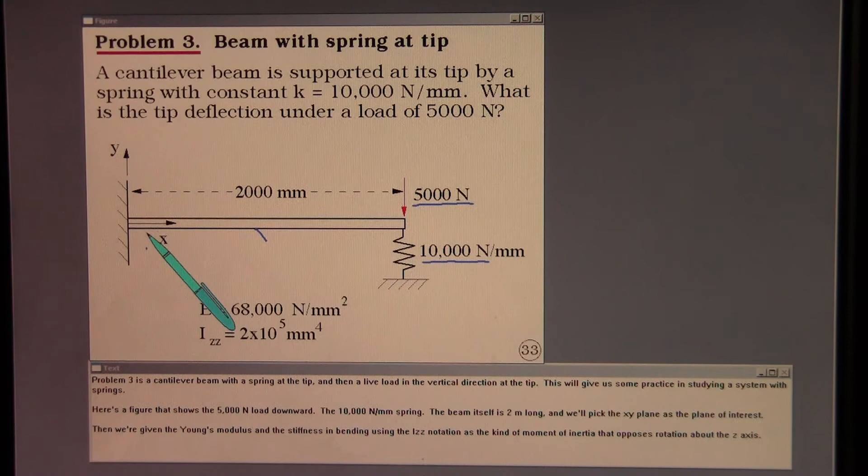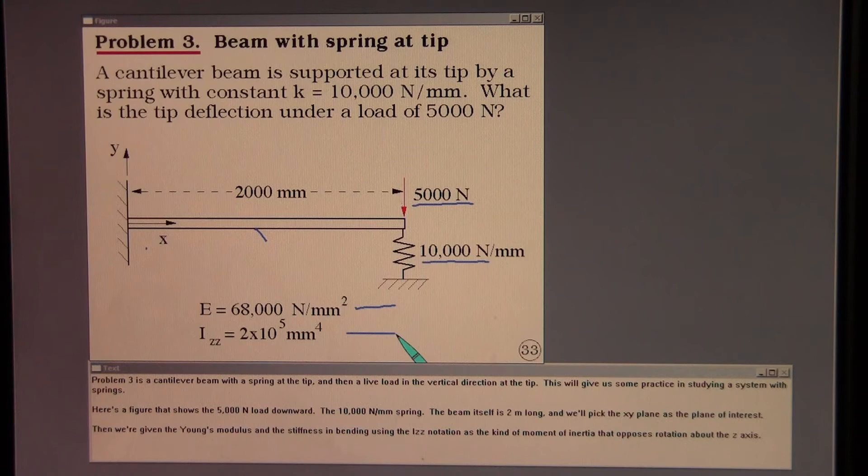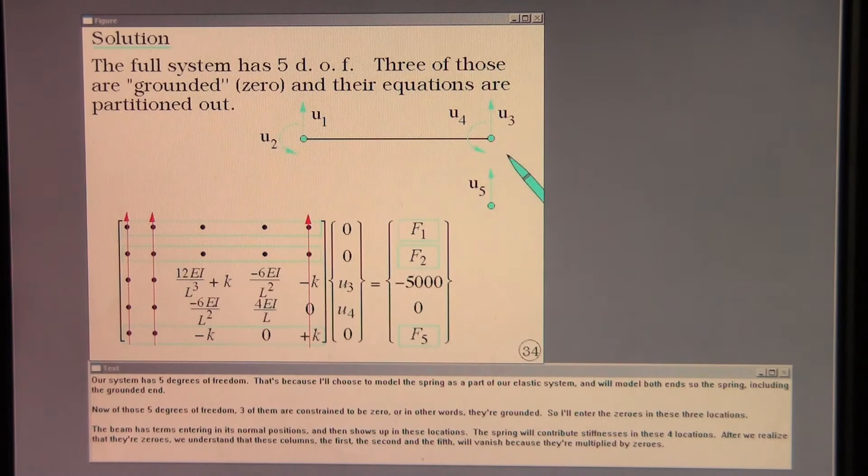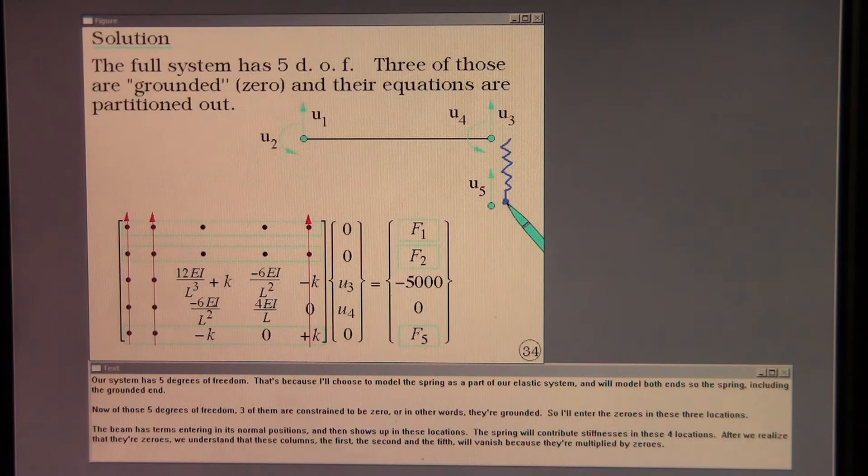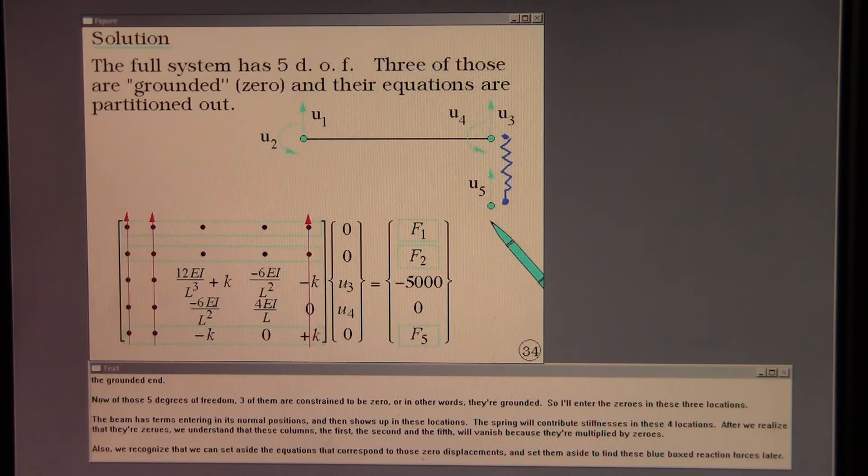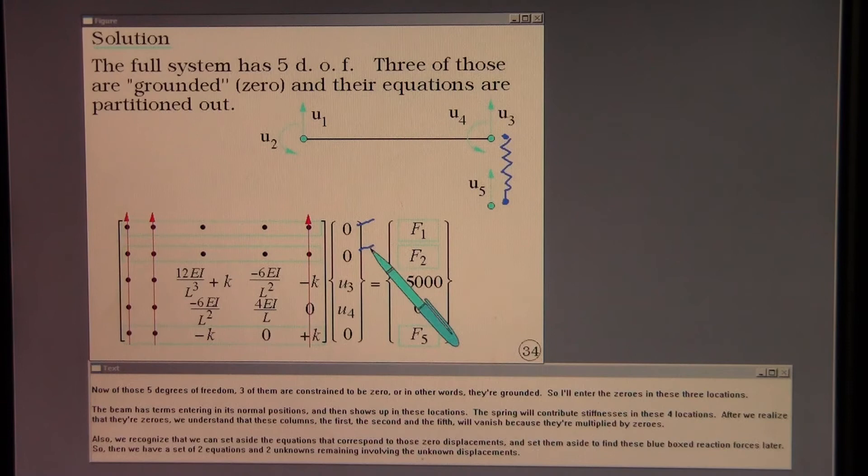Then we're given the Young's modulus and the stiffness in bending using the IZZ notation as the moment of inertia that opposes rotation about the Z axis. Our system has 5 degrees of freedom. That's because I'll choose to model the spring as a part of our elastic system and we'll model both ends of the spring including the grounded end. Now of those 5 degrees of freedom, 3 of them are constrained to be 0. Or in other words, they are grounded. So I'll enter the zeros in these 3 locations.